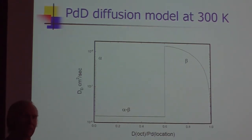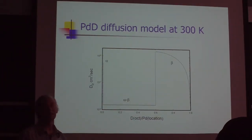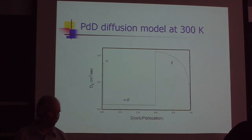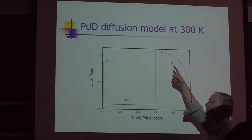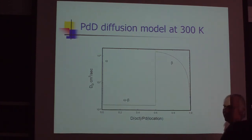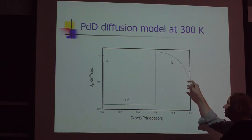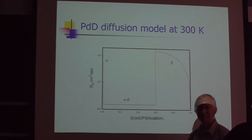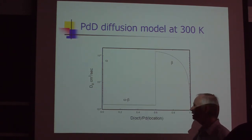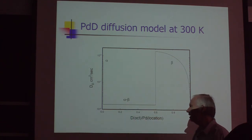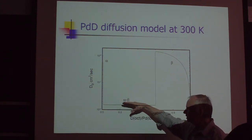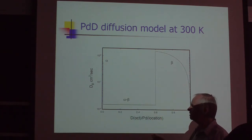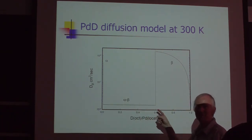Alternatively, you can work with an Onsager type model to get an effective diffusion coefficient. When you do that, you construct a curve like this. In the alpha region, we have the textbook value. In the beta phase, the model uses Baranowski's data. In the miscibility gap, we have Mencoli's data, which is all over the place. There's a permeation measurement giving a value down here.